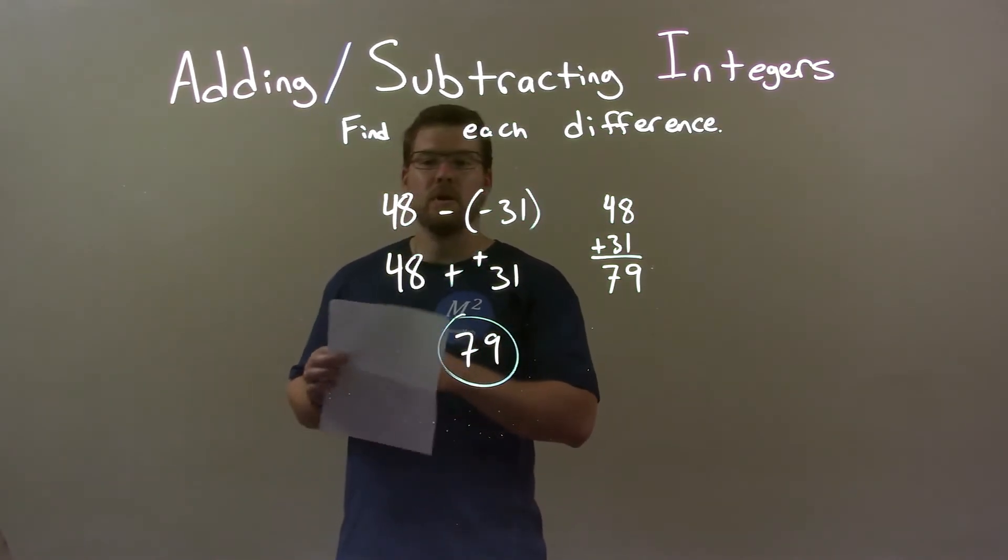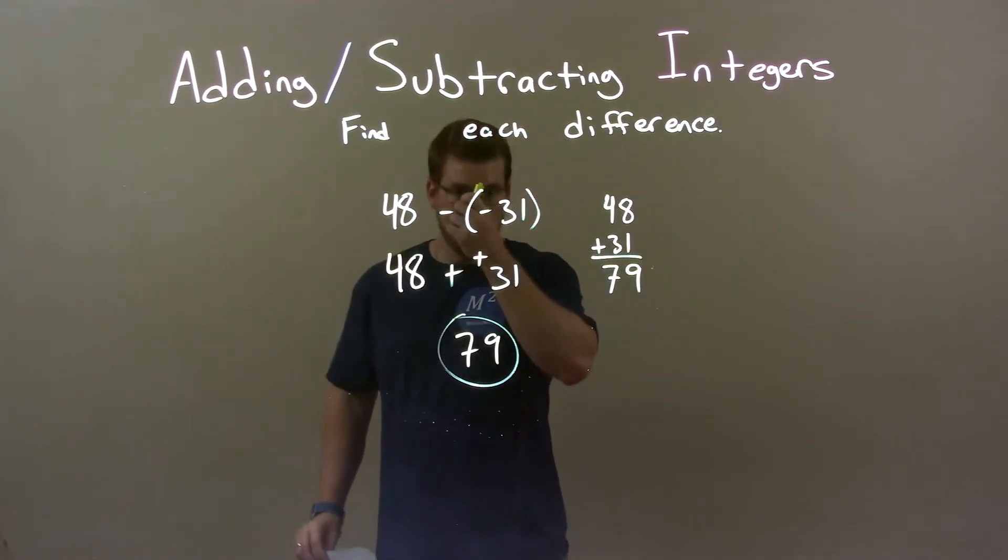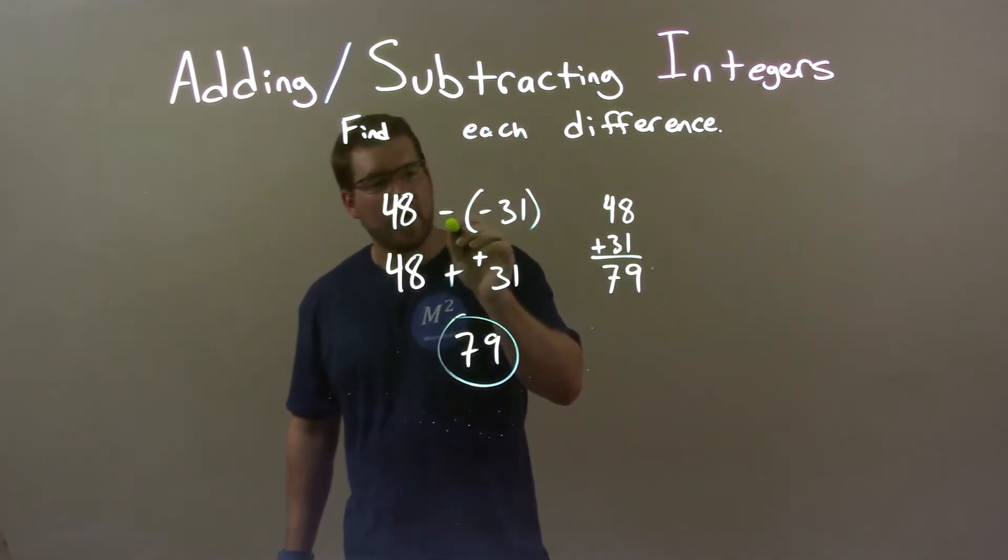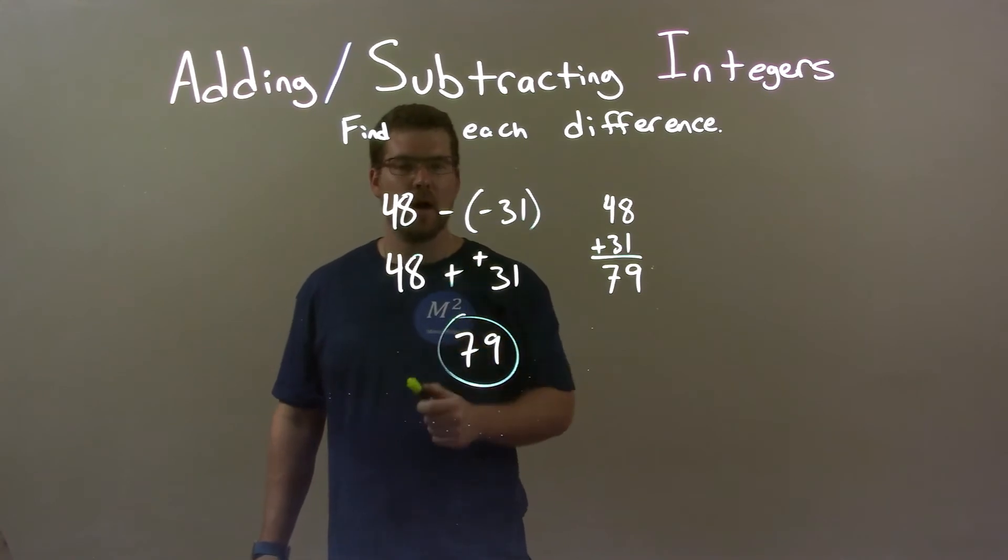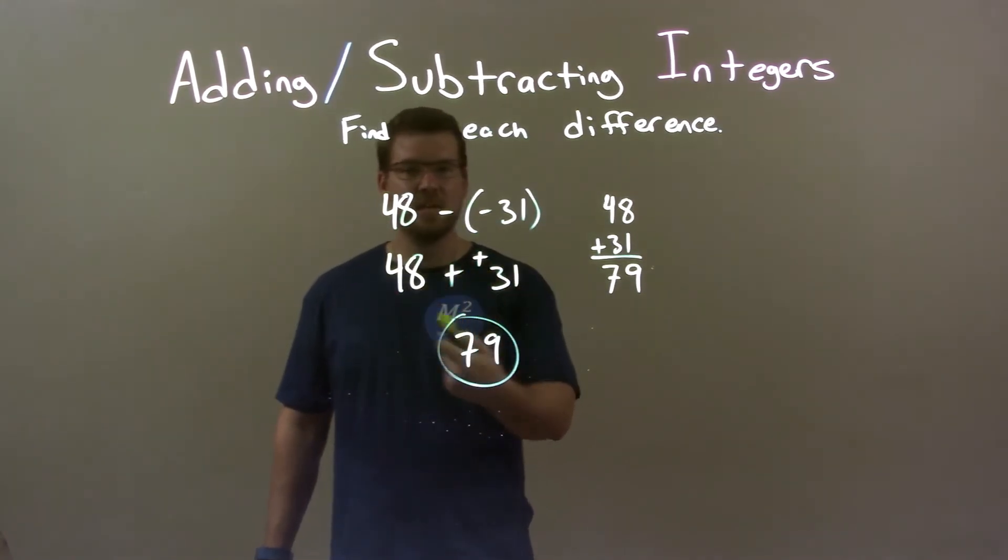So, quick recap. We're given 48 minus a negative 31. Well, I see that minus a negative is the same thing as adding a positive. So, I convert that because I have to see that. I like it. It's easier for me.